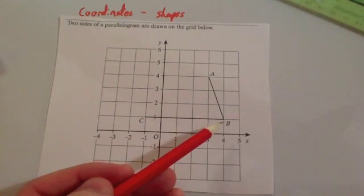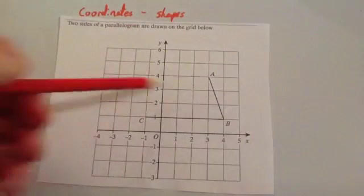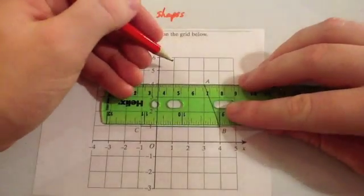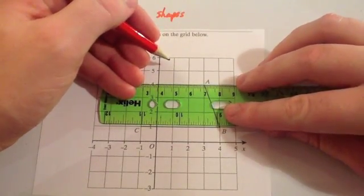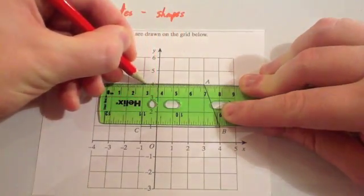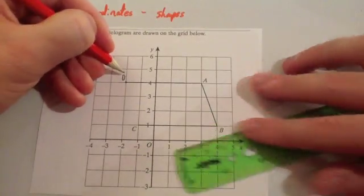So this BC is one, two, three, four, five across. So we're going to draw a line up here, which is five across. So one, two, three, four, five across to there. So that there is the point D.